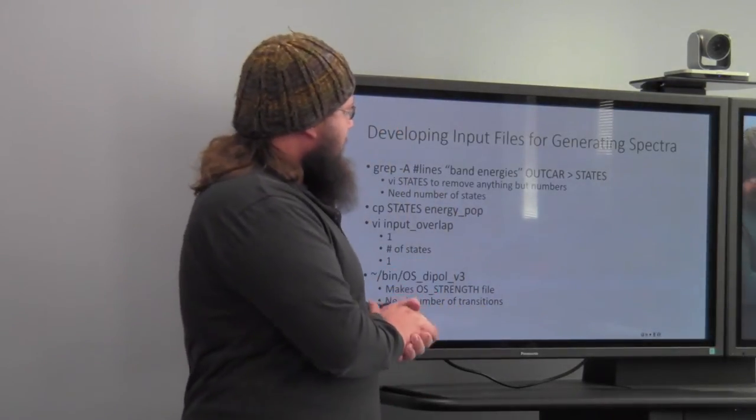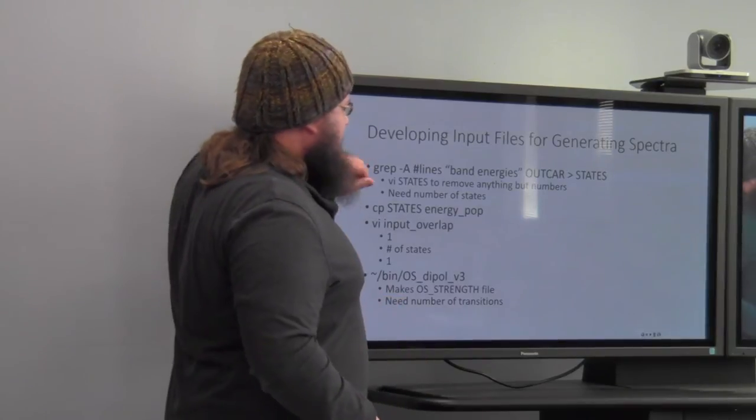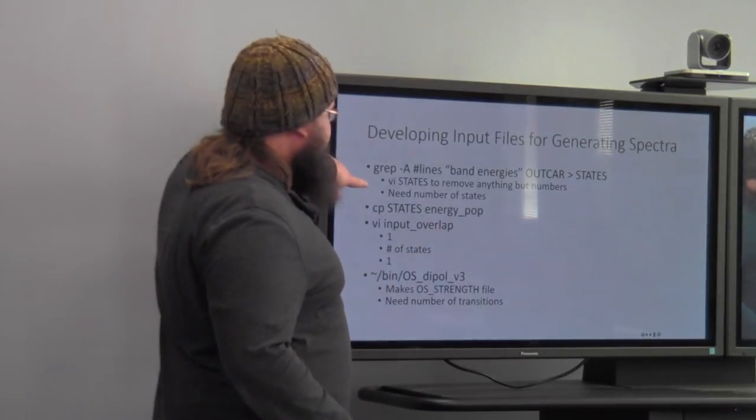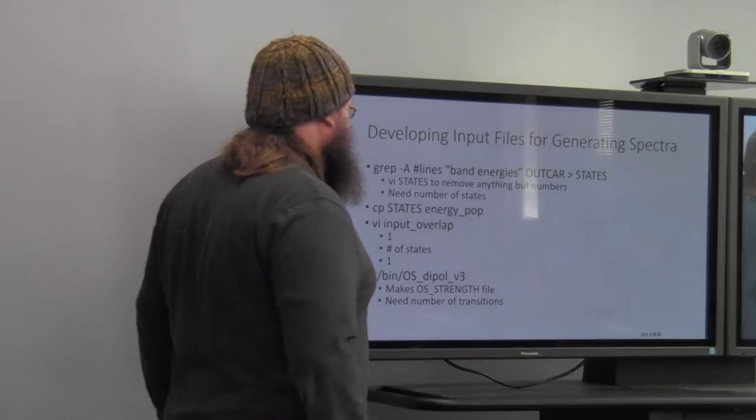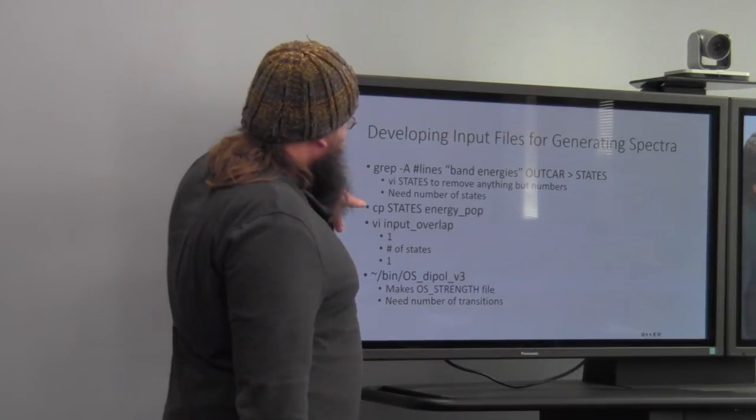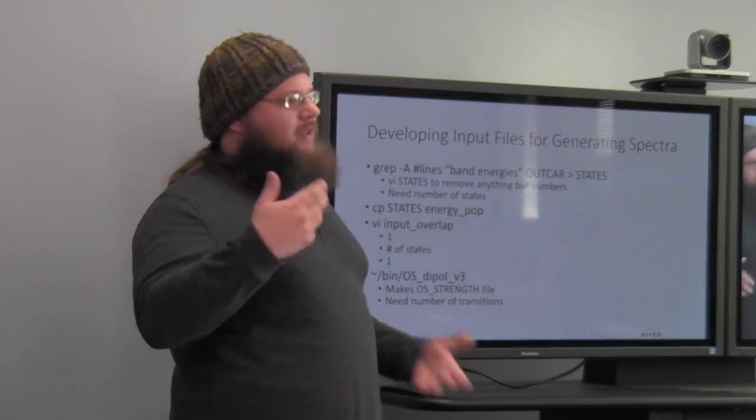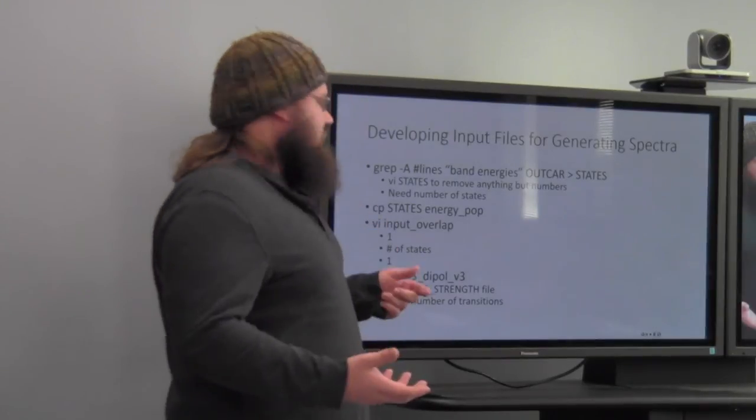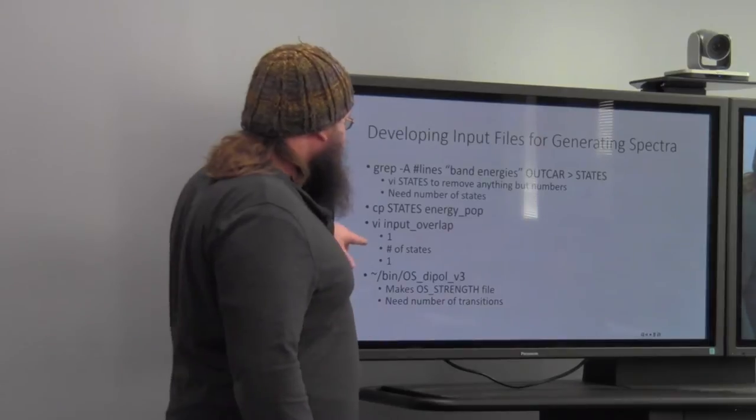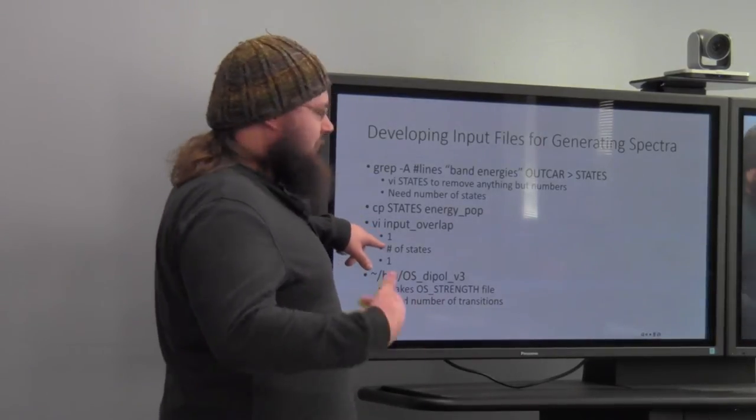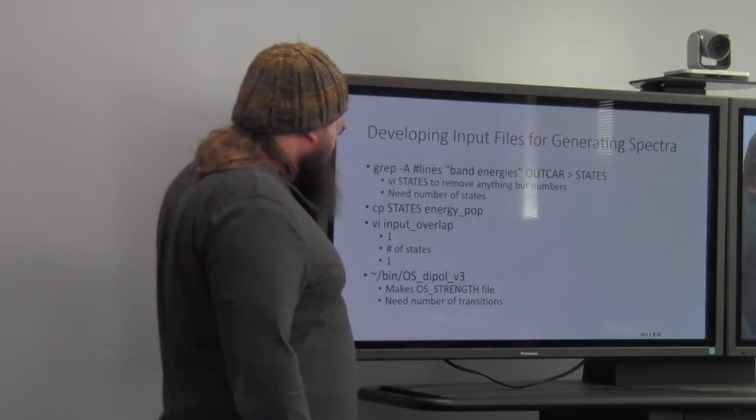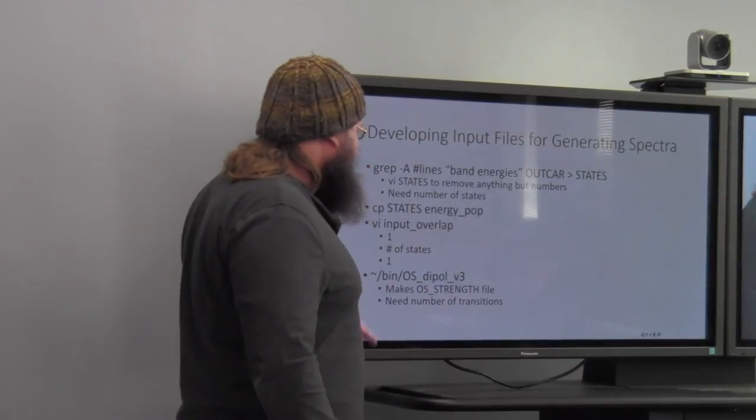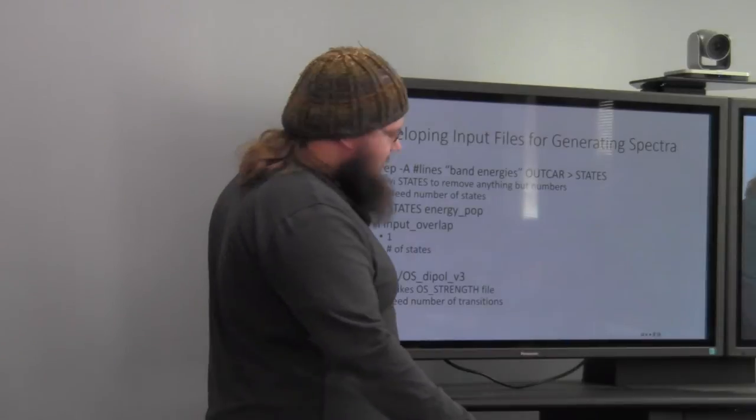All right. So, to develop your input files for generating the spectra, you make the states file, like half a dozen people have already talked about, and you VI it. And out of this, you need the number of states for later. You copy the states into an energy_pop file. That's just how the script works, is it needs an energy_pop file. Then, you have to make this new file called VI input_overlap. You go one, and then the next line, you have number of states, and then the last line, you put another one. And then you run the script OS_dipole_V3, which makes the OS strength file. And out of that, you need the number of transitions.